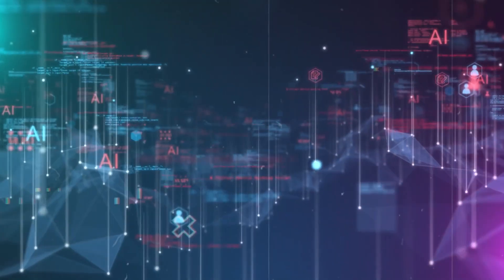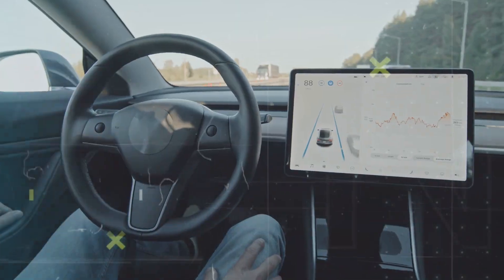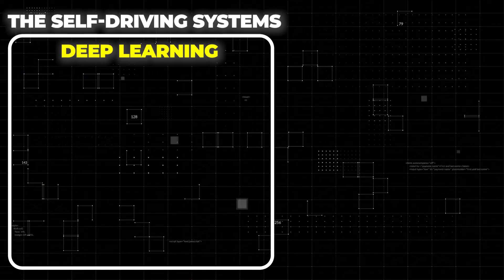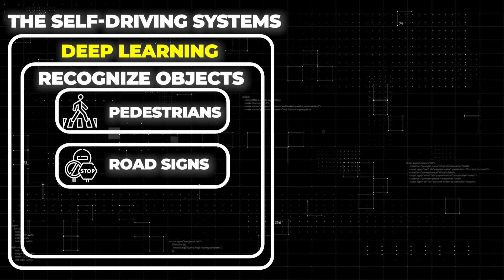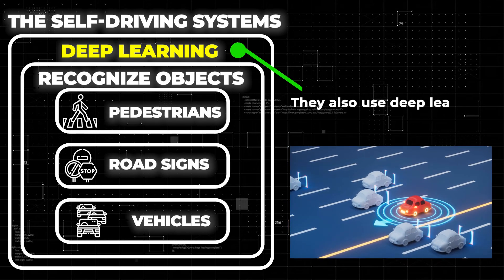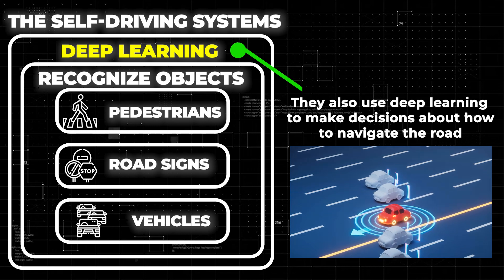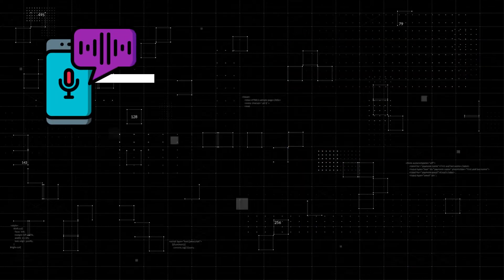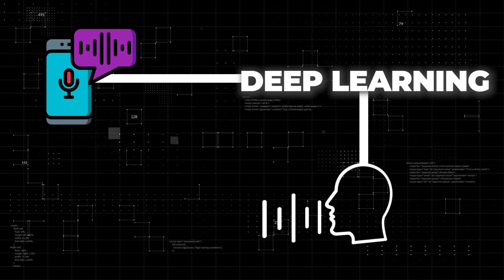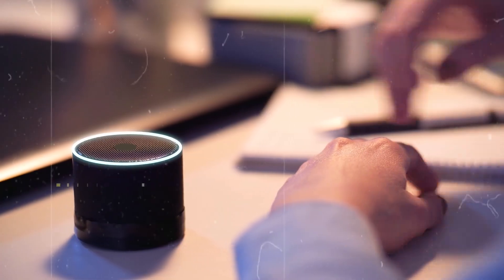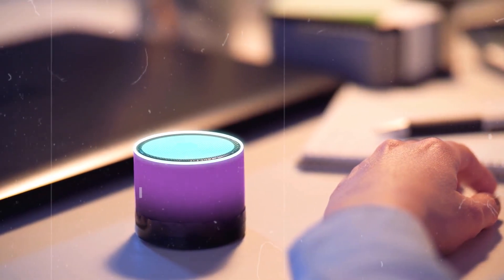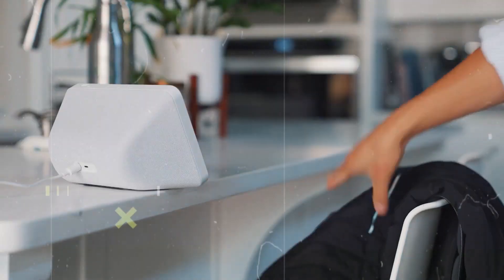Let's talk about some real-world applications of deep learning. One good example is self-driving cars. The self-driving systems in these cars use deep learning to recognize objects like pedestrians, road signs, and other vehicles. They also use deep learning to make decisions about how to navigate the road. Another example is the technology behind Alexa and Siri. These voice assistants use deep learning to understand human speech and to respond with useful information. Deep learning has made these assistants much more accurate and natural sounding than they were just a few years ago. So the next time you ask Alexa for the weather forecast, you should thank deep learning.